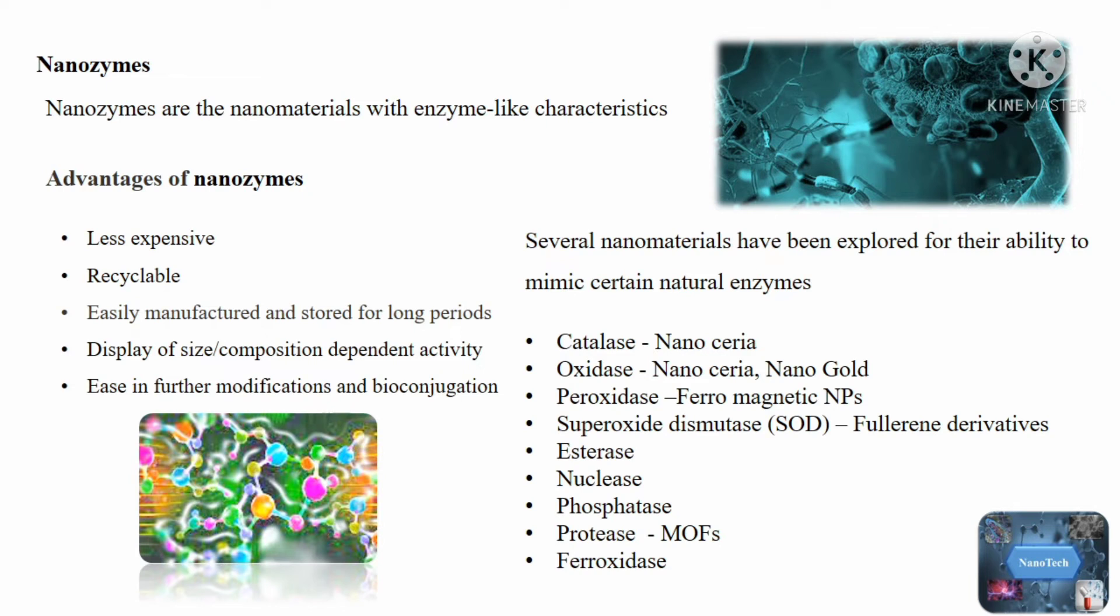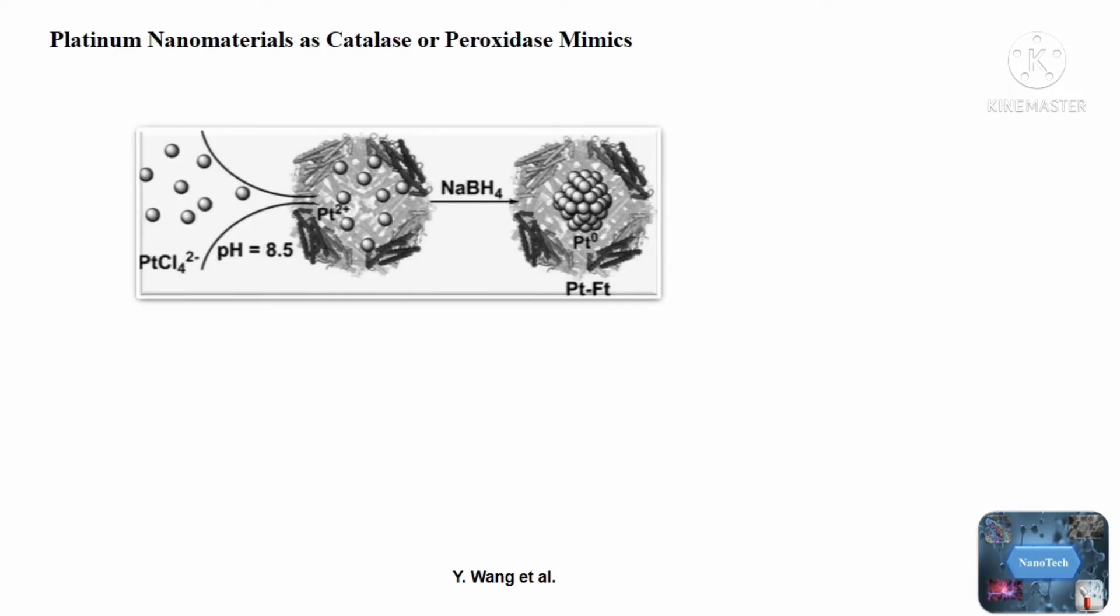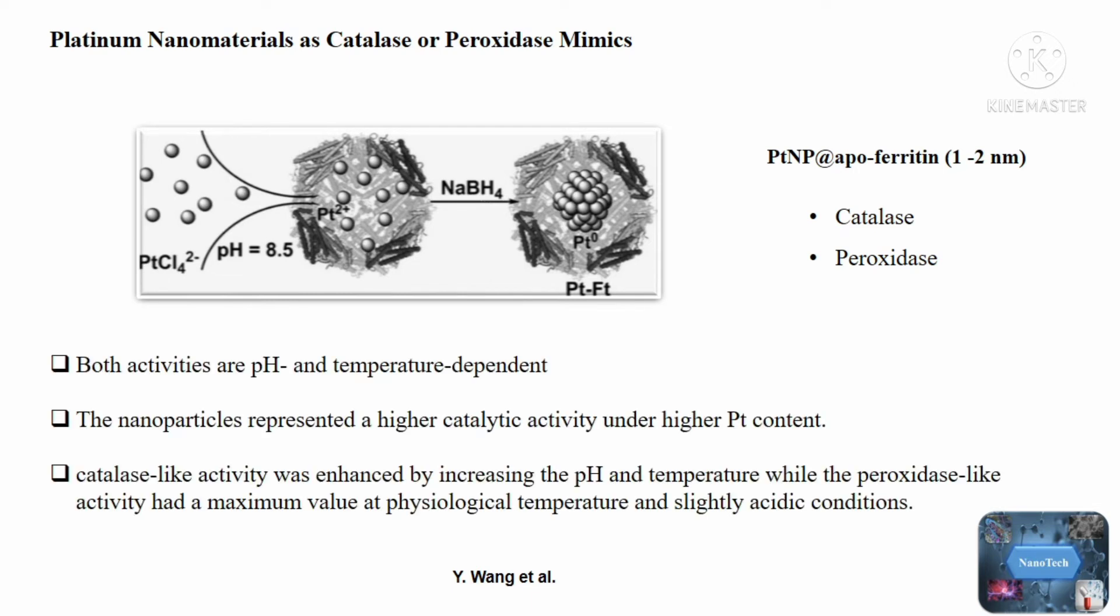With remarkable stability, a group of researchers created 1-2 nanometer platinum nanoparticles within apoferritin, PTNP at apoferritin. Surprisingly, the platinum nanoparticles at apoferritin displayed two enzyme-mimicking activities, catalase and peroxidase. Both actions are affected by pH and temperature. The results showed that increasing the pH and temperature increased the catalase-like activity, whereas the peroxidase-like activity maximized at physiological temperature and slightly acidic environments.